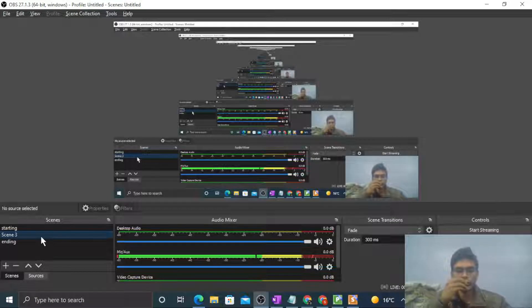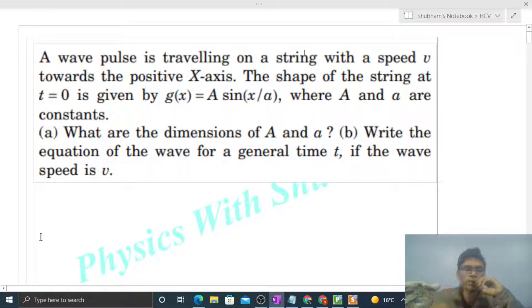Okay, hi everyone. Today let's discuss one interesting problem. It says a wave pulse is traveling on a string with a speed v towards the positive x-axis. The shape of the string at t equals zero is given by this equation, where capital A and small a are constants.